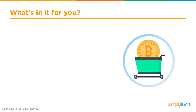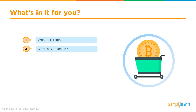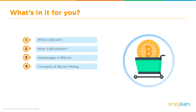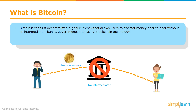Let's understand certain basics. What's in it for us today? We need to know what Bitcoin is, understand the underlying technology blockchain, see the advantages of Bitcoin compared to other digital technologies, then go into the concepts of Bitcoin mining, and do a demo on certain aspects of Bitcoin mining. Bitcoin is the first decentralized digital currency that allows users to transfer money peer-to-peer without any intermediaries like banks, governments, agents, or brokers — all using blockchain technology.